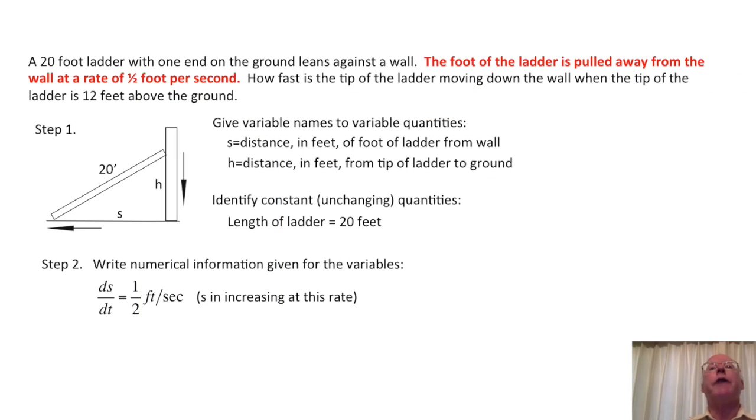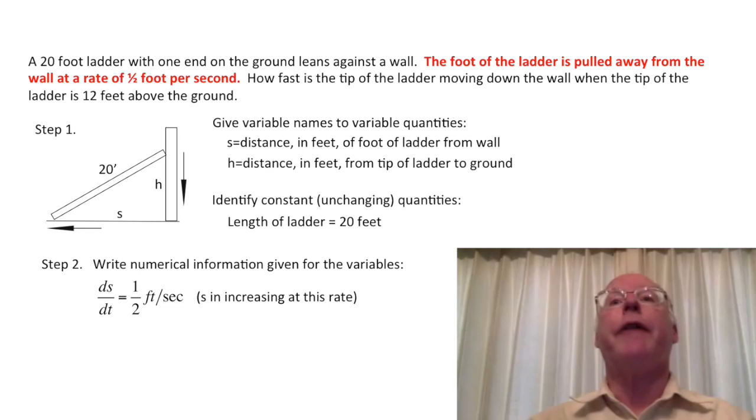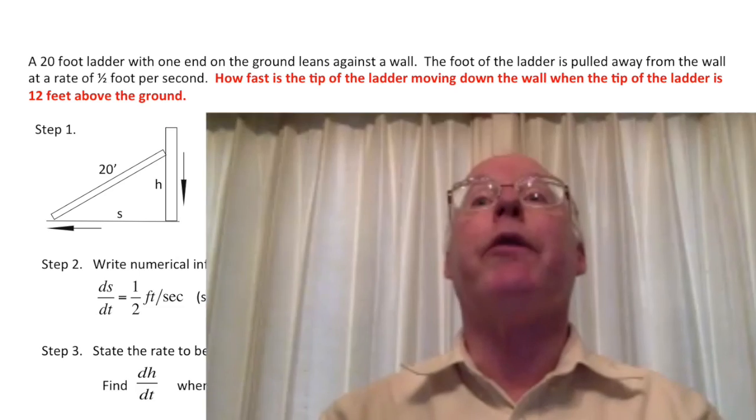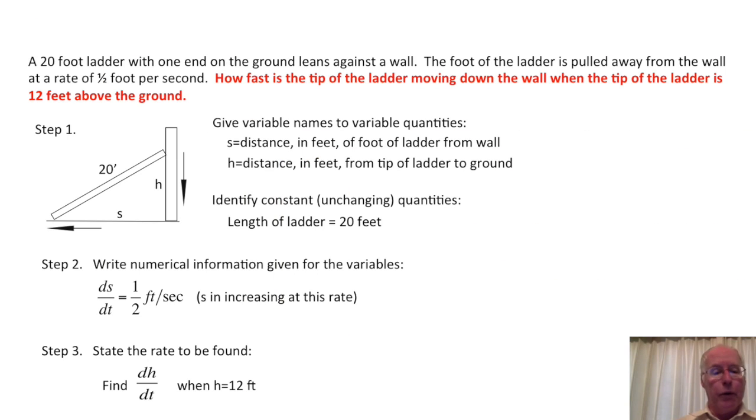Next, we clearly state what it is we wish to find. This is found in the last sentence of the problem. How fast is the tip of the ladder moving down the wall when the tip of the ladder is 12 feet above the ground? So we declare the rate to be found: find dh/dt when h equals 12 feet.